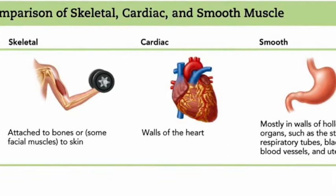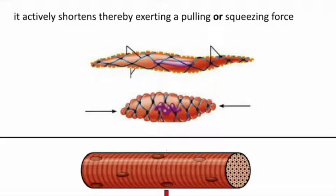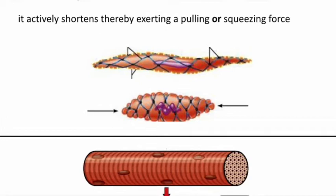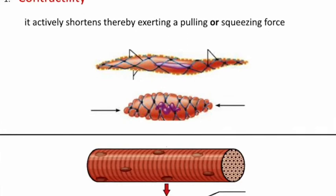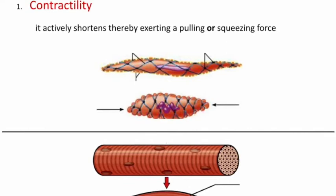Now we'll get into the special characteristics that all these muscle tissue types share. The first property is contractility — this is unique to muscle tissue and is the ability to shorten and exert a pulling or squeezing force. Creating this pulling or squeezing force is the main function of muscle cells, so contractility is the central characteristic.